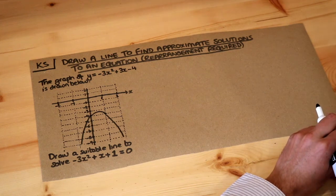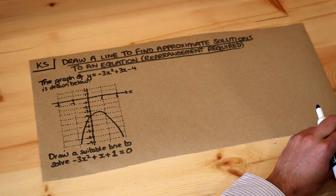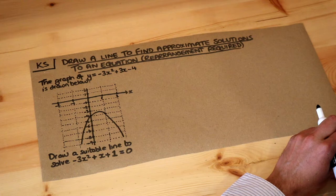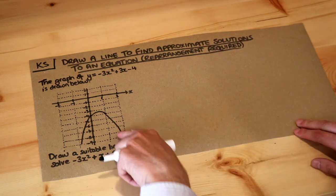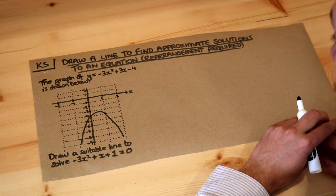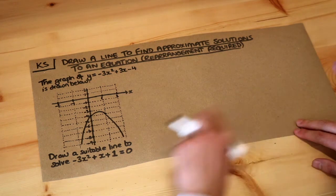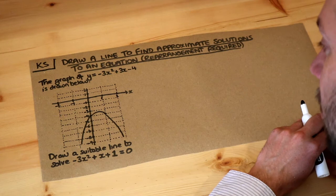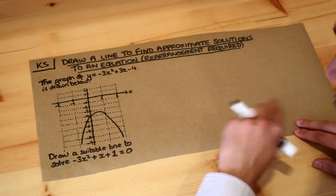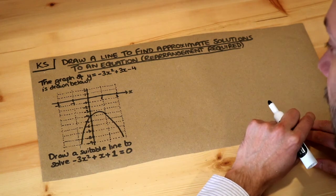Hello and welcome to this Dr Ross-Math's key skill video on drawing a line to find approximate solutions to an equation. We've got a graph here of y equals minus 3x squared plus 3x minus 4. We need to use a suitable line to solve minus 3x squared plus x plus 1 equals 0.